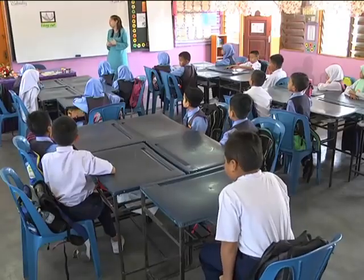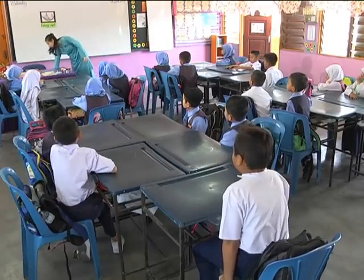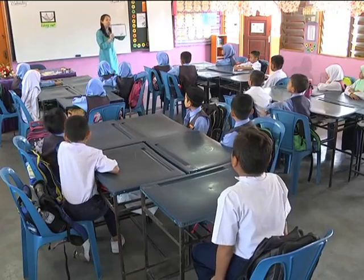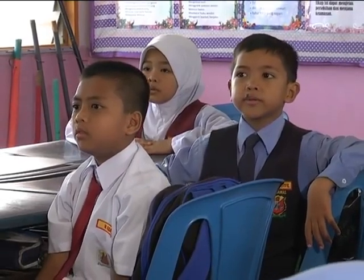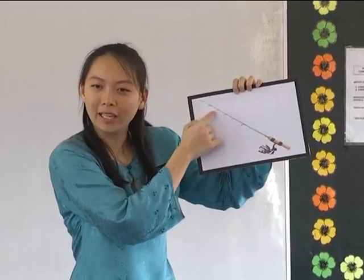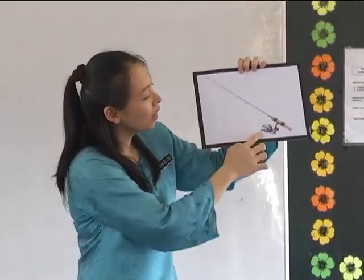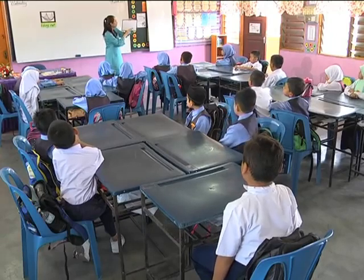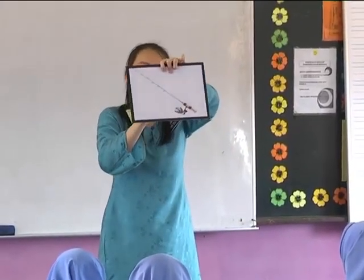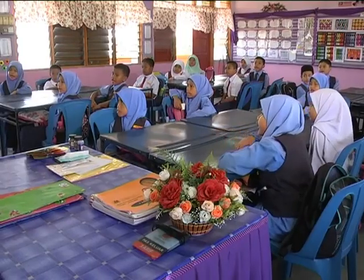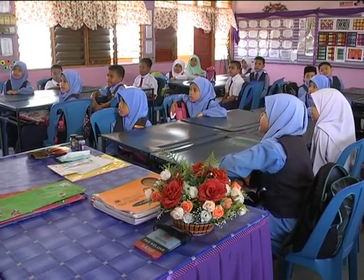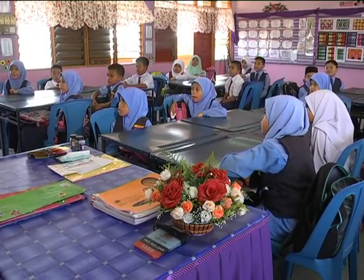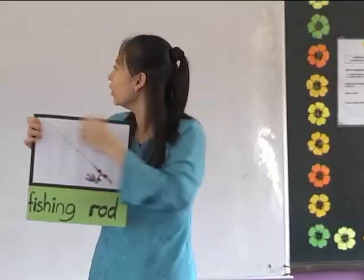What else can we use? Fishing rod. Yes, I have a fishing rod. I have a picture of a fishing rod. This is where your fishing line is, and this is where you will pull your fish in. Let's spell fishing rod: F-I-S-H-I-N-G R-O-D. Fishing rod. Very good.